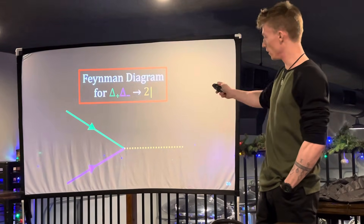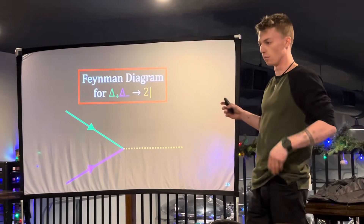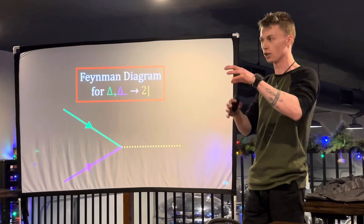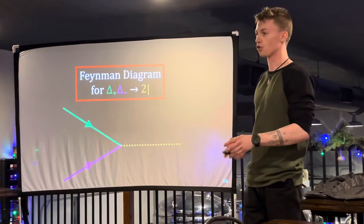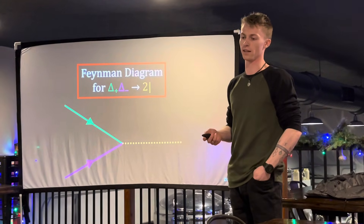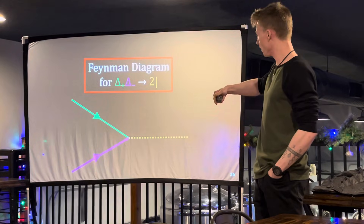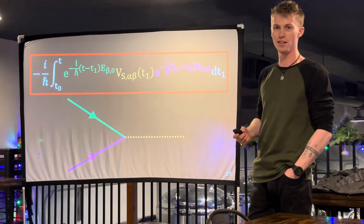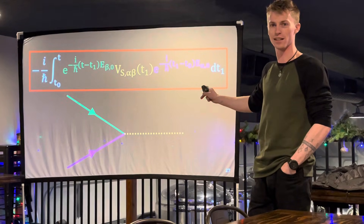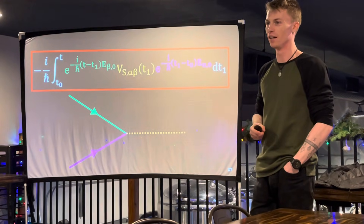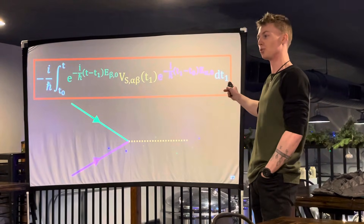Another thing about these lines is that they actually represent mathematical equations. You can plug in, in terms of an equation, each line segment in these diagrams. This is a term from what's called a Dyson expansion, and that Dyson expansion is equal to those three lines. The real point is that even if you understand the analogy, you can actually do real physics.